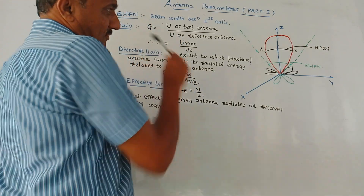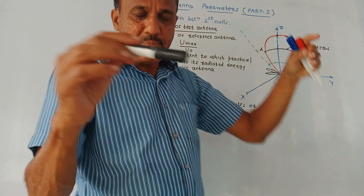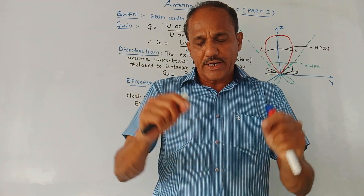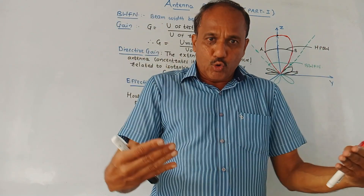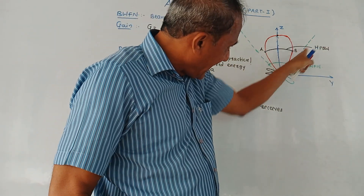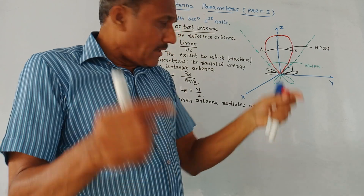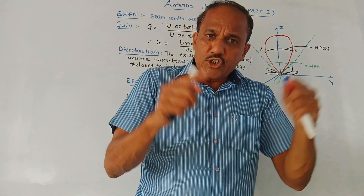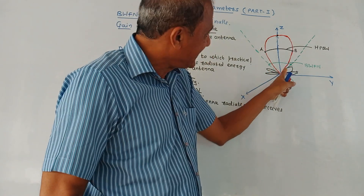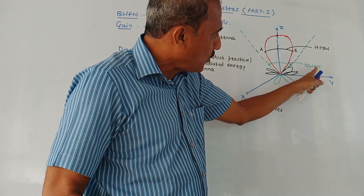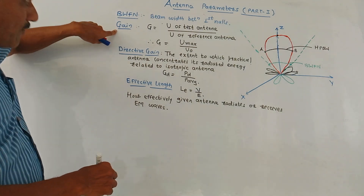Next is BWFN. Referring to the diagram, there are two dotted lines — drawn with the green pin — indicating directions along which you are getting zero radiation, that is null output. If you measure the angular width between these two lines, it is called BWFN: Beam Width between First Nulls.